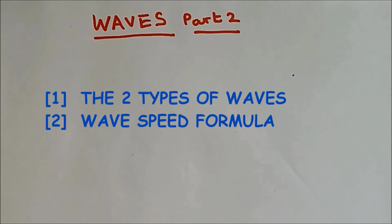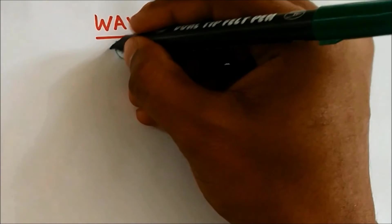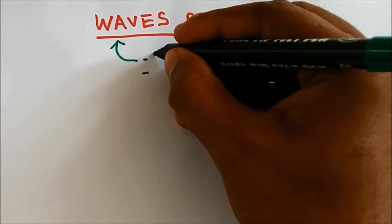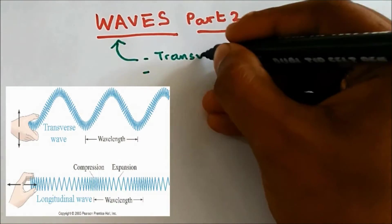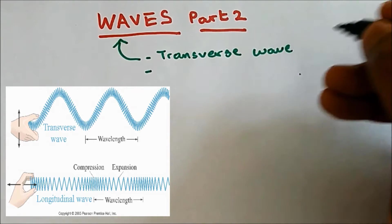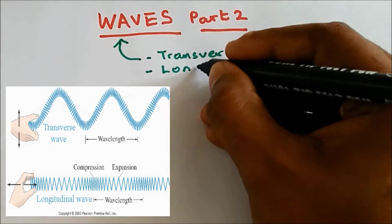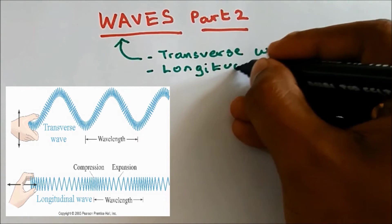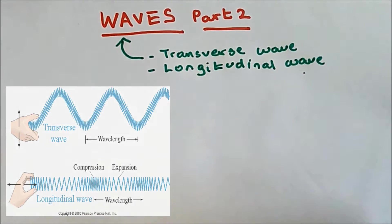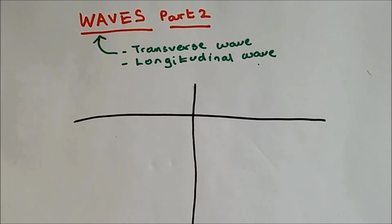Okay, so what are the two types of wave that you need to learn? The two types of wave are transverse wave and longitudinal wave. So let's compare the transverse wave and longitudinal wave.